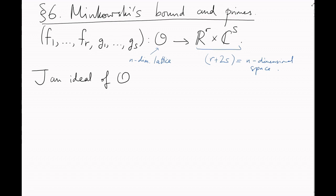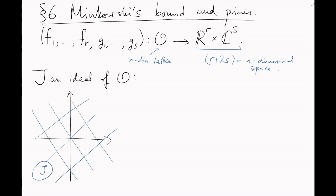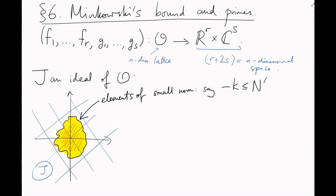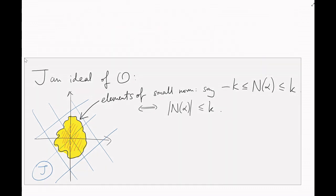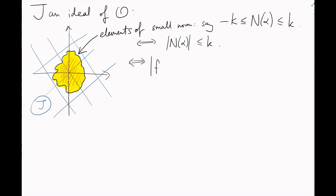Now, suppose you've got an ideal J of O, that is, a sub-lattice inside this space. And you want to blow a small convex bubble of elements of small norm to try to bound the number of ideal classes as before. Let's say your bubble contains elements alpha, whose norm is between minus K and K. So, the absolute value of the norm of alpha is, at most, K.